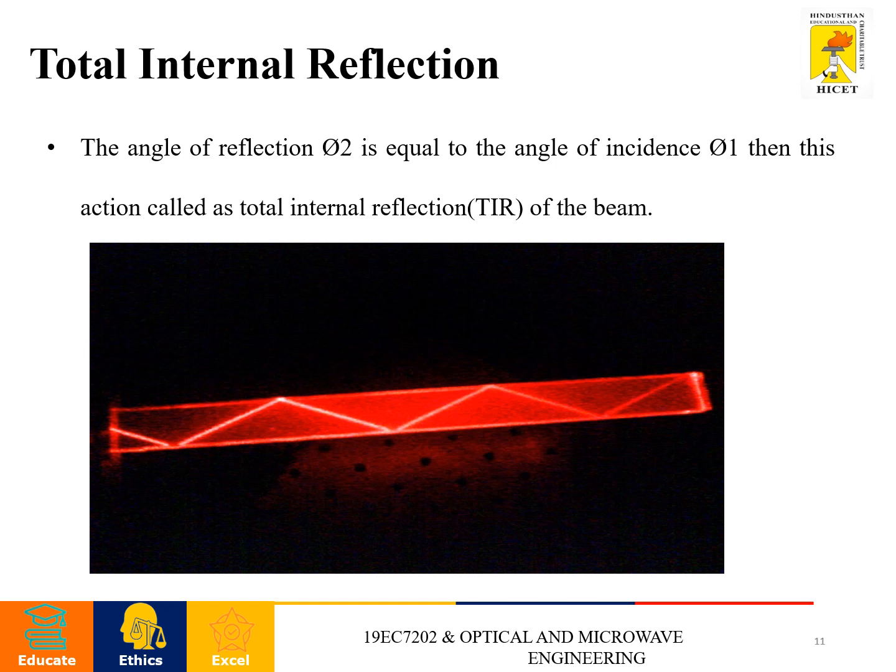This is total internal reflection. When the angle of reflection theta 2 is equal to the angle of incidence, then this action is called total internal reflection of the beam. Total internal reflection means the angle of incidence is equal to the angle of reflection.